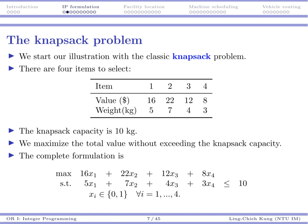If this is our integer program or binary program — this is an IP — we understand why it should be an IP. Because you cannot carry 70% of item 1 or 20% of item 2. All or nothing. When you have an all-or-nothing situation, you need a binary variable.